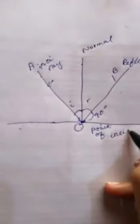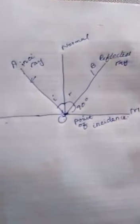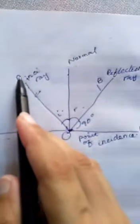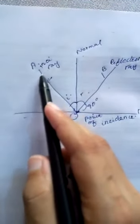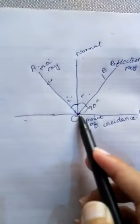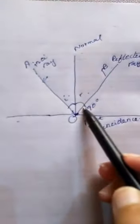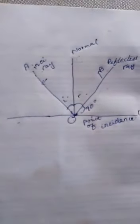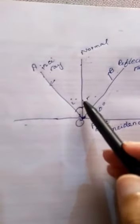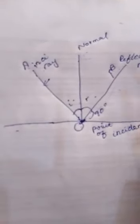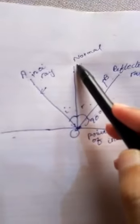The point of incidence is where the incident ray meets the surface. The angle of incidence and angle of reflection are formed here, and we call this the normal ray. Light comes from the incident ray, meets that point, and reflects to the other side. The angle AON equals the angle NOB, meaning the angle of incidence equals the angle of reflection.